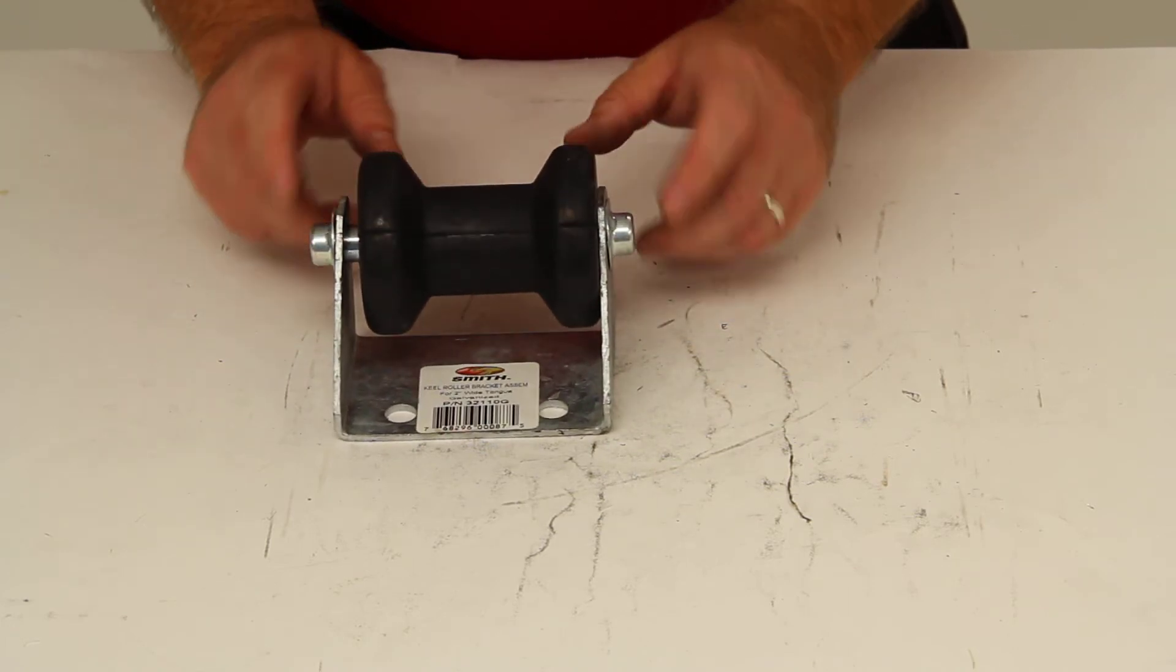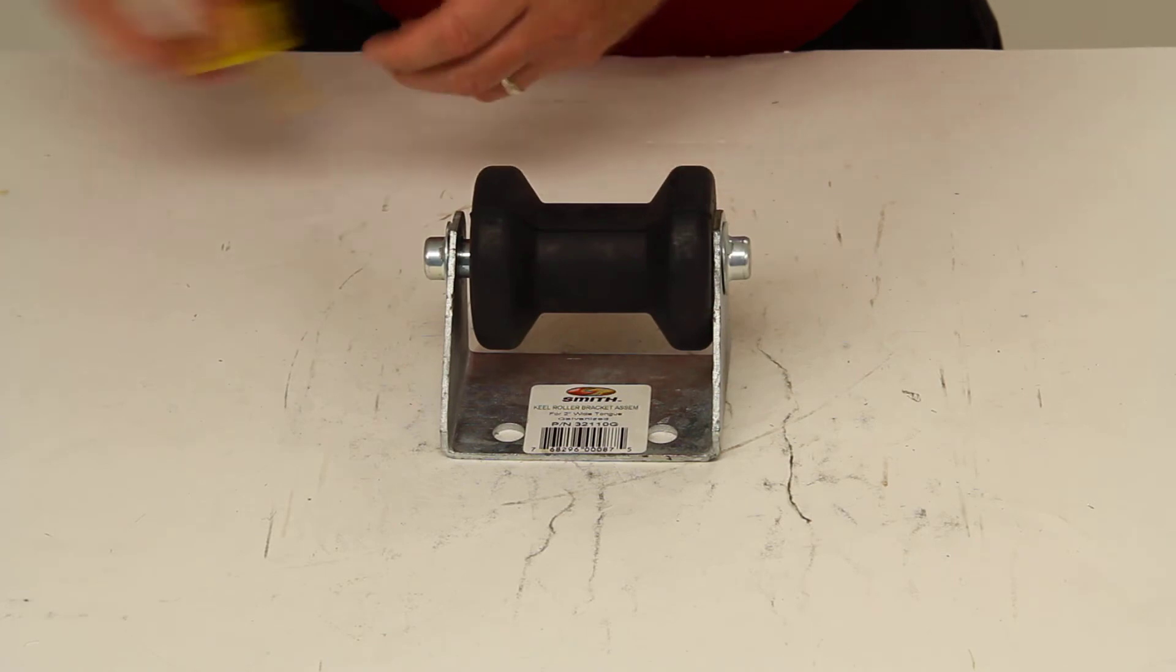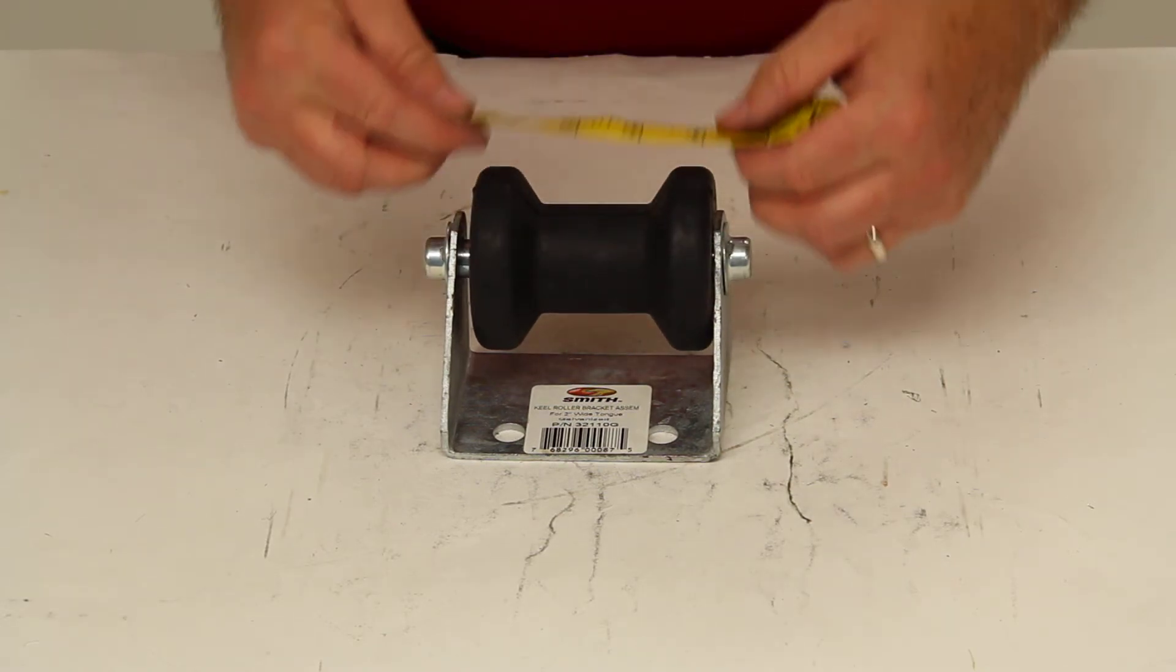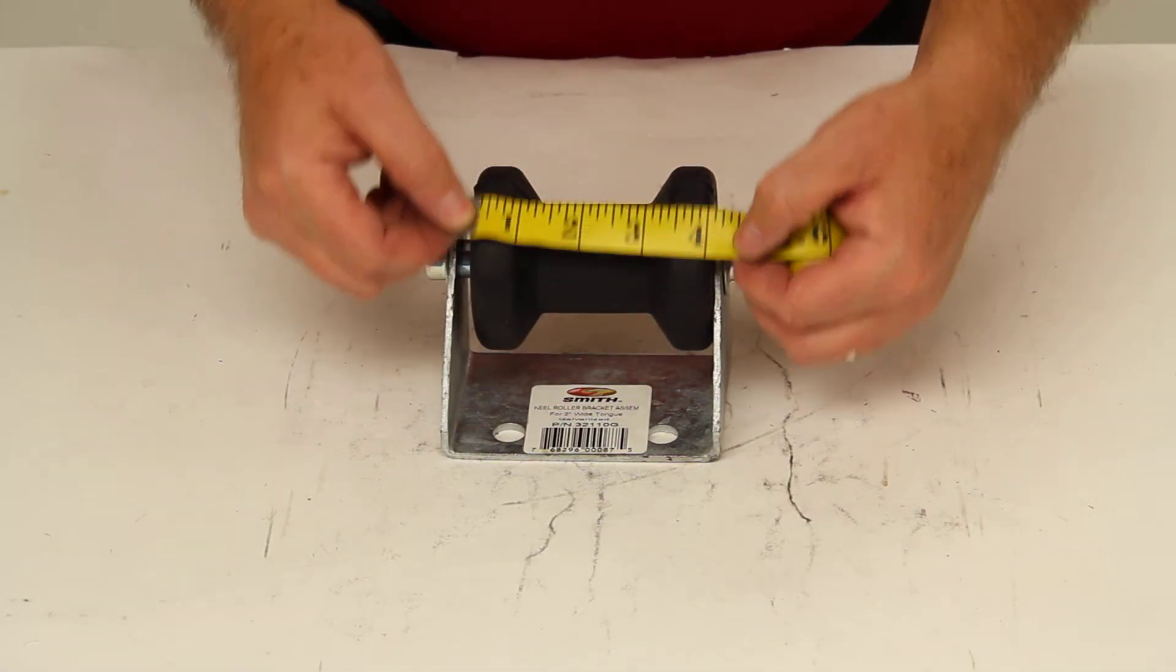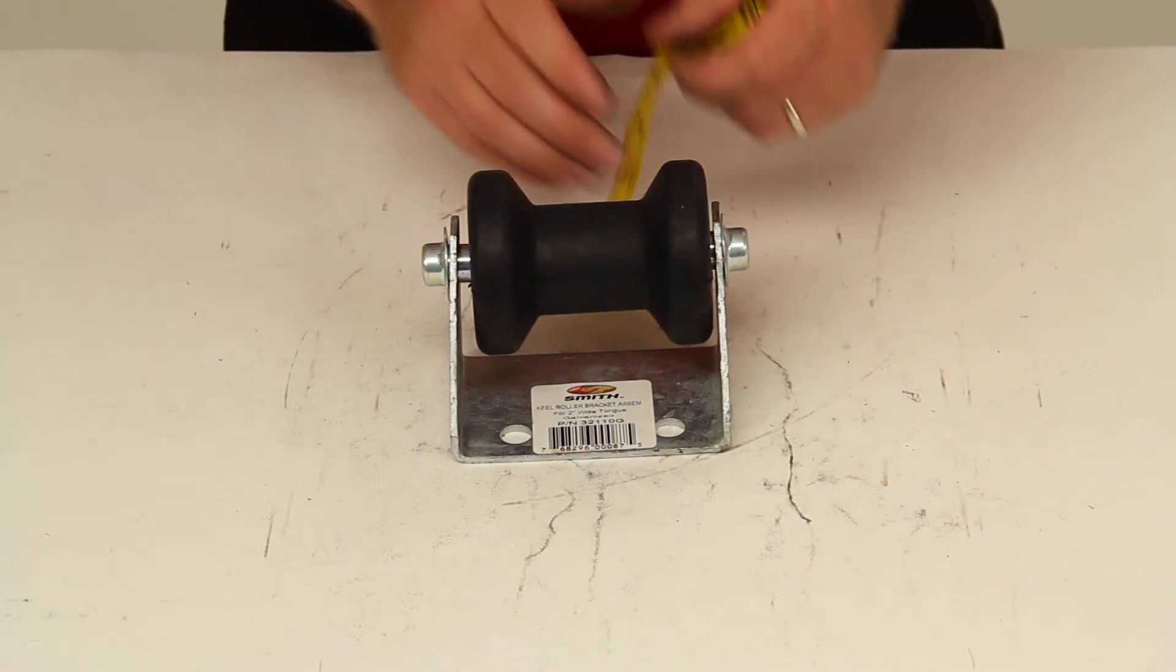The black rubber roller delivers long-lasting performance. A few measurements on this: the roller length is going to be 4 inches. It does ride on a shaft diameter size of 5/8 of an inch.